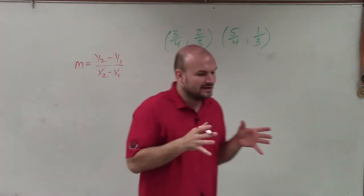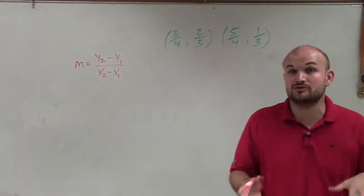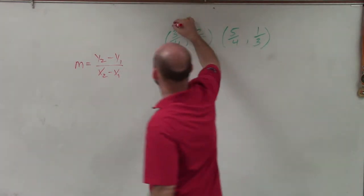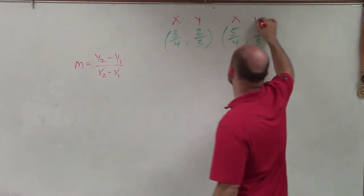And where y1, x1, y2, x2 just represent our points. So you can see that both of these points are x, y, x, y.